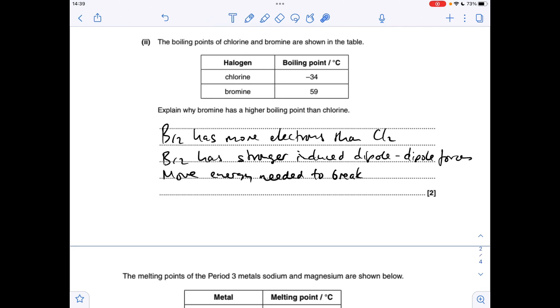And for the last part of this question, why has bromine got a higher boiling point than chlorine? It's got nothing to do with covalent bond strength, so we need to get that out of our head straight away. It's all down to the number of electrons in the molecule.